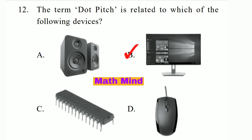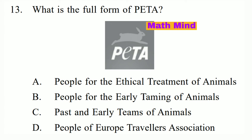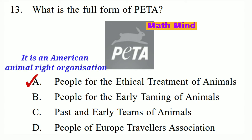Question No. 13. What is the full form of PETA? Option A is correct: People for the Ethical Treatment of Animals. It is an American animal rights organization.